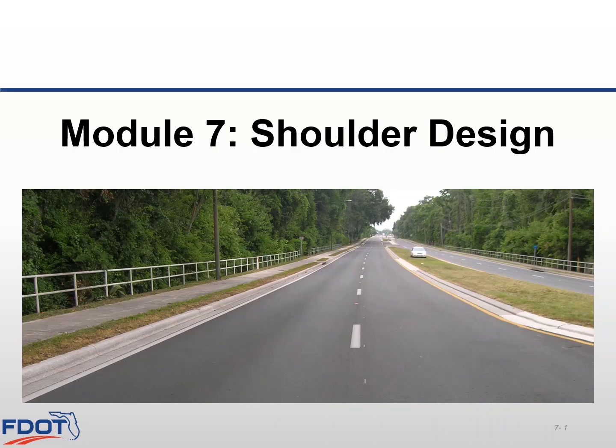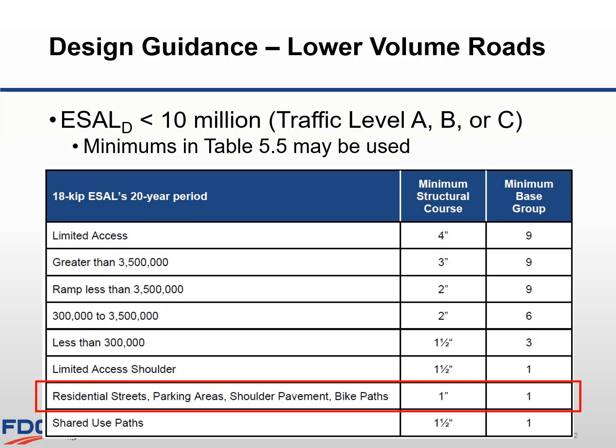Module 7 will discuss the process for designing shoulder pavement. On low-volume roadways, where your design ESAL is less than 10 million — that would be traffic level A, B, or C — you could design your shoulders using the minimum values shown in Table 5.5.